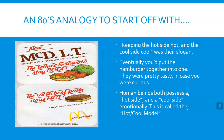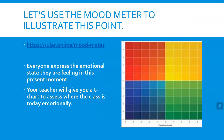If you're wondering why I'm talking about McDonald's burgers that haven't been sold in 30 years, here's the point. Human beings both possess a hot side and a cool side. This model is called the hot-cool model, and we're going to look into that today. We're going to start off by plotting your present emotion on the mood meter.